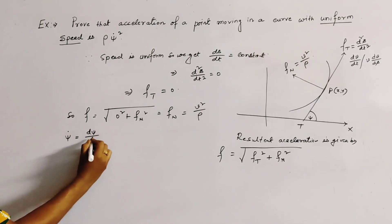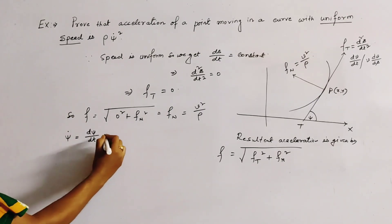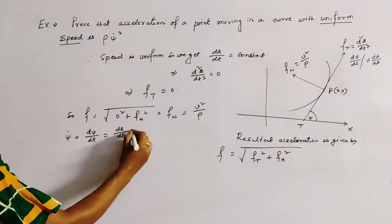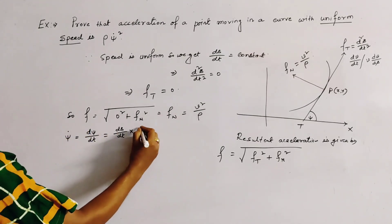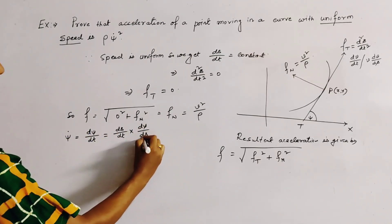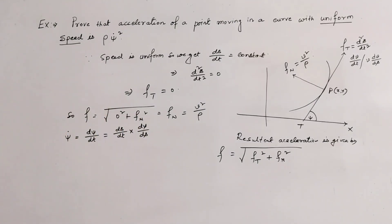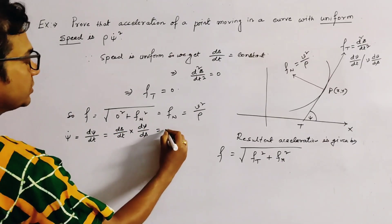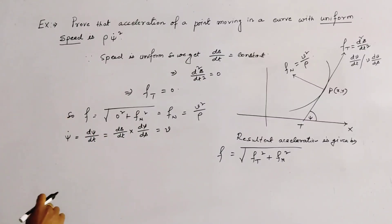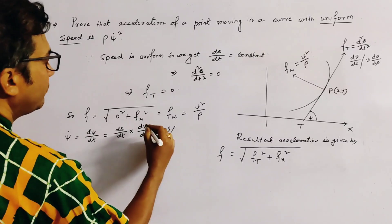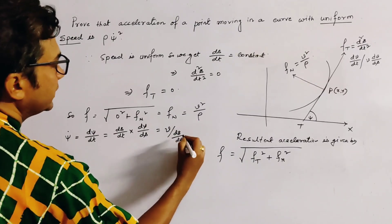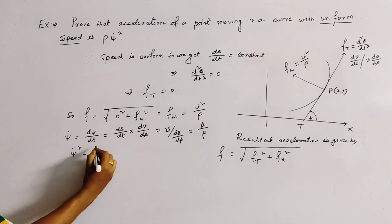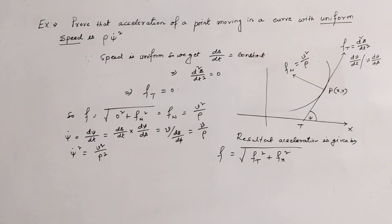ψ̇ is given by dψ/dt, which equals (ds/dt)·(dψ/ds). Here ds/dt is the speed v, and dψ/ds = 1/ρ, so ψ̇ = v/ρ.